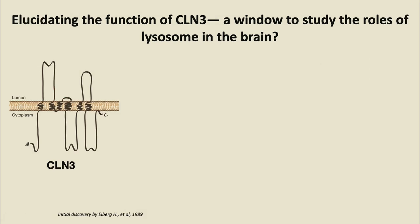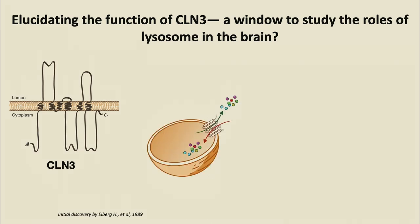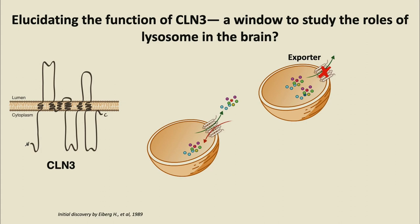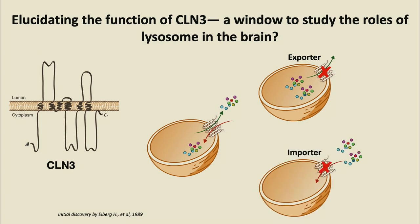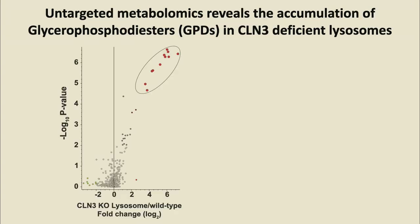The CLN3 gene was discovered more than 30 years ago to encode a lysosomal membrane protein, but its function has been completely obscure for many years. We proposed it might be a transporter of some sort since it sits on the lysosomal limiting membrane. We said maybe the LysoIP method — lysosomal immunopurification — together with metabolomics, could identify potential substrates that are either accumulating if it's an exporter, or depleted from the lysosome if it's an importer. We generated knockouts of CLN3 in HEK293T cells.